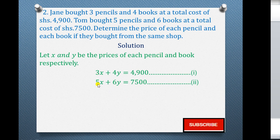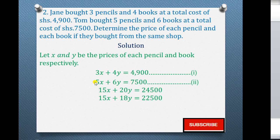The next step is solving these two simultaneous equations using any method of your choice. For section A type questions, we normally prefer shorter methods: elimination, substitution, or the matrix method. I'm going to use elimination. To eliminate x, I multiply equation one by 5 — the coefficient of x in equation two — and equation two by 3 — the coefficient of x in equation one. That gives 15x + 20y = 24,500 and 15x + 18y = 22,500. Remember, the multiplier applies to every term.